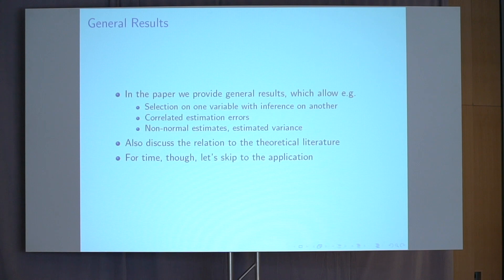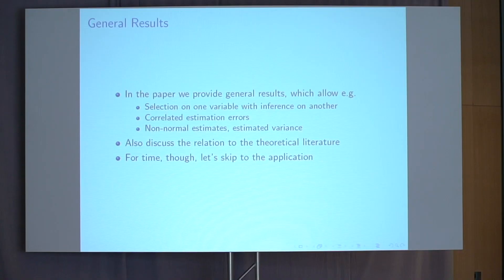In the paper we have a number of theoretical results going beyond the stylized example. These include results allowing for selection on one thing but inference on another — for example, selecting the target treatment based on outcomes for everybody, but doing inference on outcomes for some demographic subgroup. We also allow for correlated estimation errors, non-normal estimators, estimated variance matrices, and all the practical things that come up if you actually want to implement any of this. There's also a large theoretical literature we're related to, but rather than going into that in detail, I'll skip to the application.